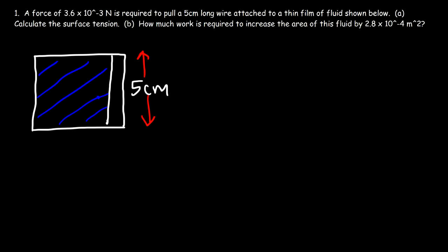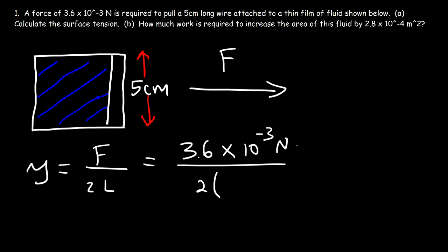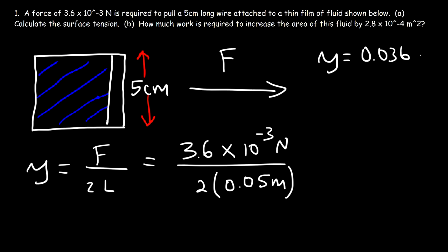A force of 3.6 × 10⁻³ newtons is required to pull a 5 centimeter long wire attached to a thin film of fluid. Calculate the surface tension. The surface tension is γ = F / 2L. L is 5 centimeters, which we convert to 0.05 meters. So γ = (3.6 × 10⁻³) / (2 × 0.05) = (3.6 × 10⁻³) / 0.10 = 0.036 newtons per meter.